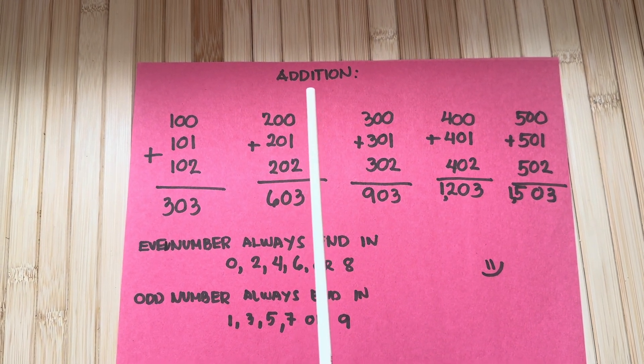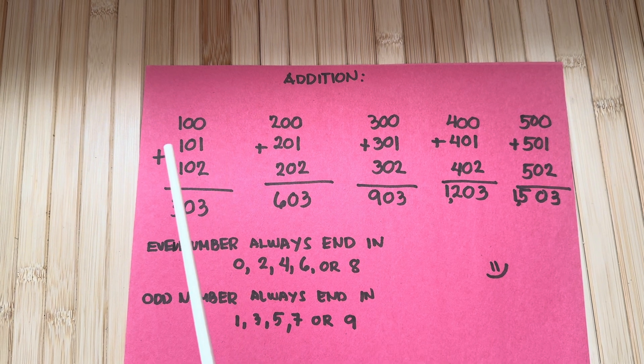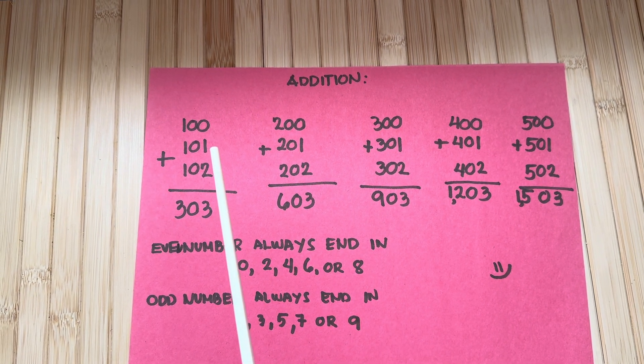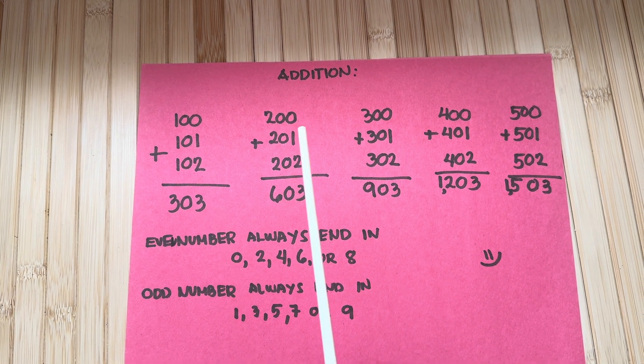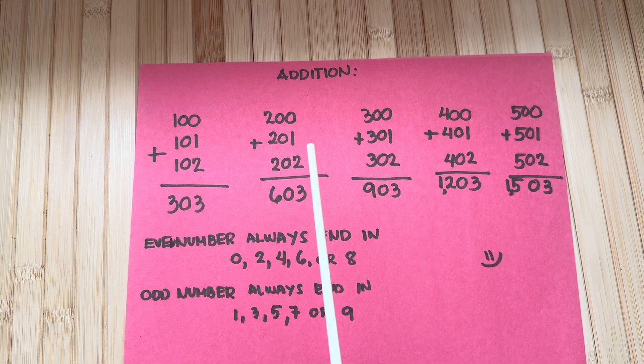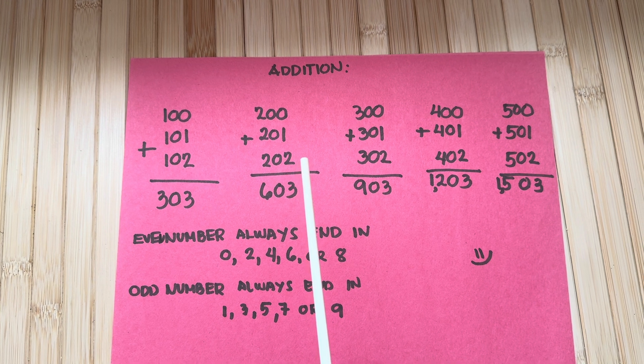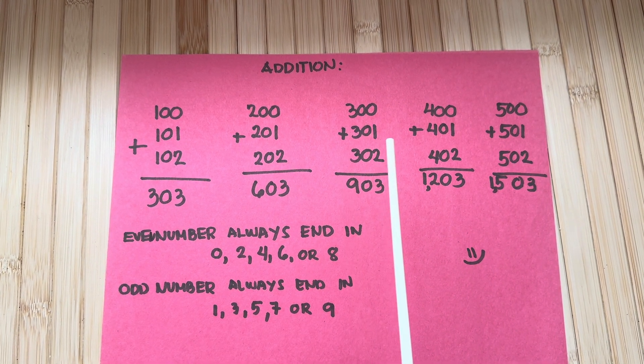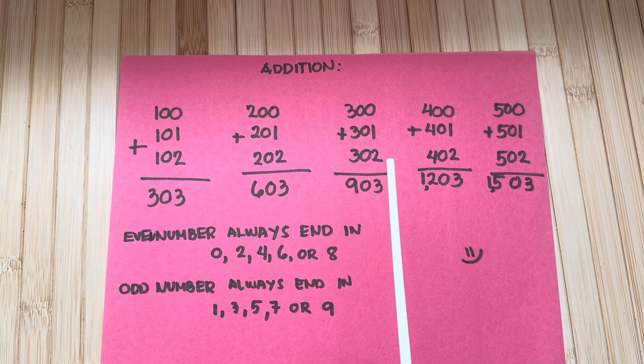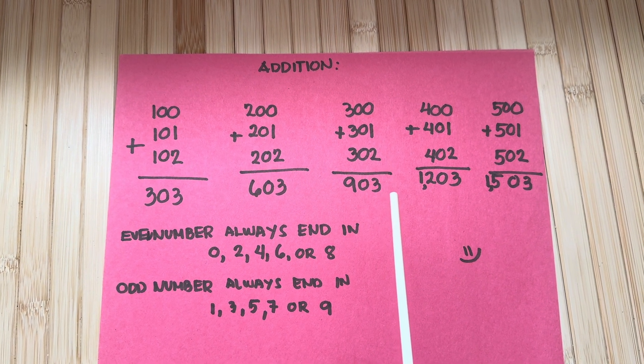Let's learn addition. 100 plus 101 plus 102 equals 303, 200 plus 201 plus 202 equals 603, 300 plus 301 plus 302 equals 903.